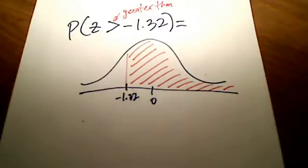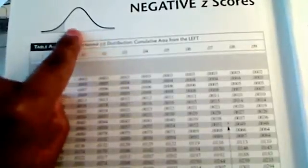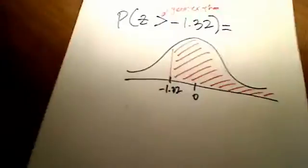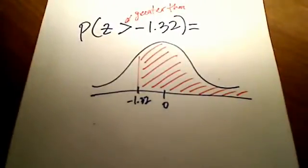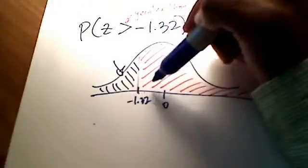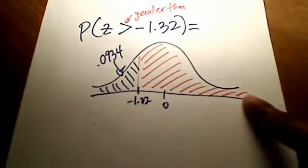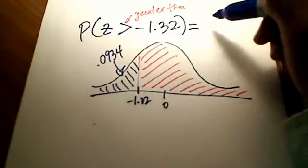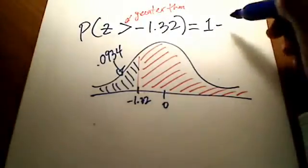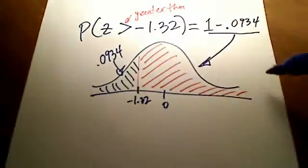So I can't just use the table as is because that's shading to the left. So I need all of this area over here to the right of that curve. Well, if I use the table as you saw in the previous example I just did, I had an area of 0.0934. In other words, all of this area over here that I just shaded in blue is 0.0934. Well, because you know that the total area is 1, then this area over here in red must be its complement. Complement means 1 minus 0.0934.